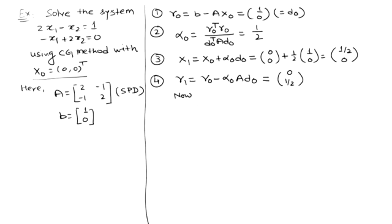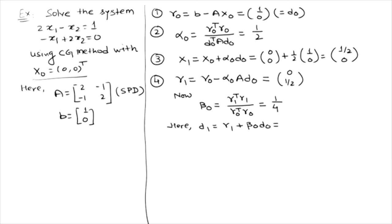Once we have R¹, we calculate β₀ = R¹ᵀR¹ / R⁰ᵀR⁰, which comes out to be 1/4. The new search direction D¹ = R¹ + β₀D⁰ = [0, 1/2] + (1/4)[1, 0] = [1/4, 1/2].